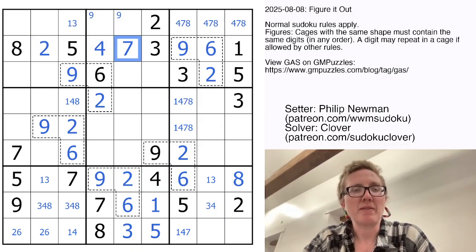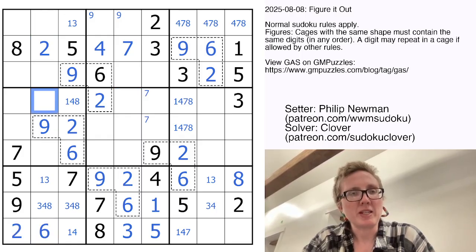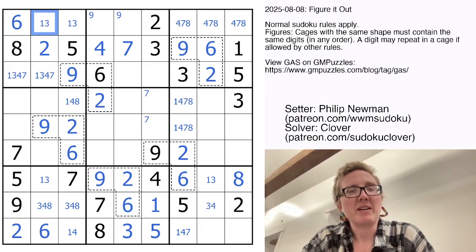To finish this row, we need to place a 4 and a 7. That puts 7 in one of these cells. The 2 resolves my 2, 6, and so now I can place a hidden 6 in this region right here. Those are going to be 1, 3, 4, and 7 to finish the region. We can't have a 4 or 7 there again because of that 4, 7, 8 triple.